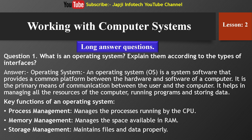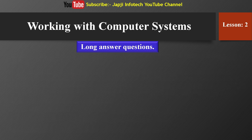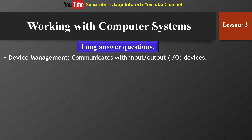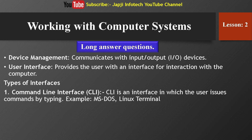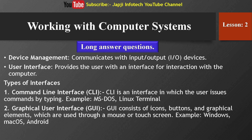Second function: Memory Management — managing the space available in RAM. Third: Storage Management — maintaining files and data properly. Fourth: Device Management — communicating with input and output devices. Fifth: User Interface — providing the user with an interface to interact with the computer. Types of interfaces: First, Command Line Interface — the user issues commands by typing. Examples: MS-DOS, Linux Terminal.